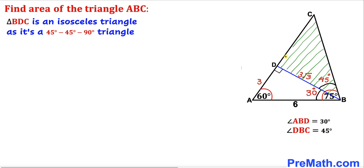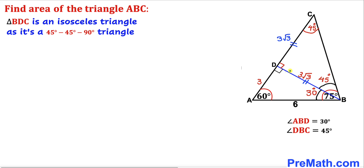Now let's focus on triangle BDC. We know that this angle D is 90 degrees and angle DBC is 45 degrees, so the remaining angle BCD has got to be 45 degrees as well. Since these two angles are 45 degrees each, this is an isosceles triangle. Therefore side DC has got to be equal to side BD, which is 3 times square root of 3. So DC is also 3 times square root of 3.